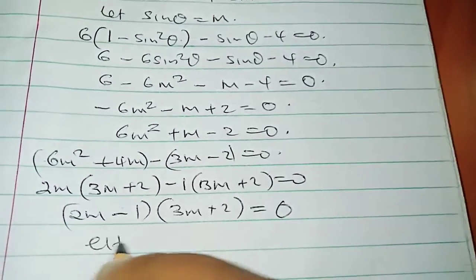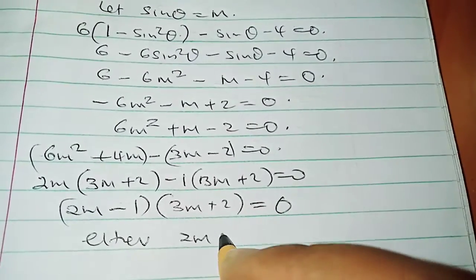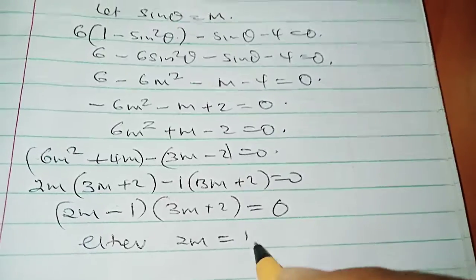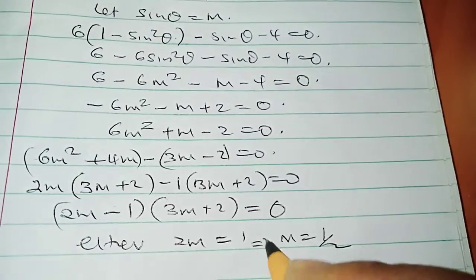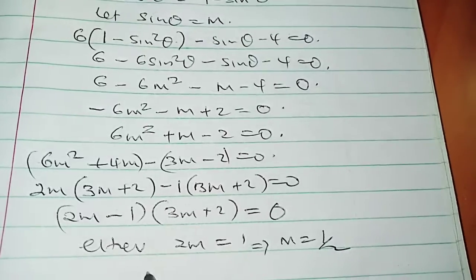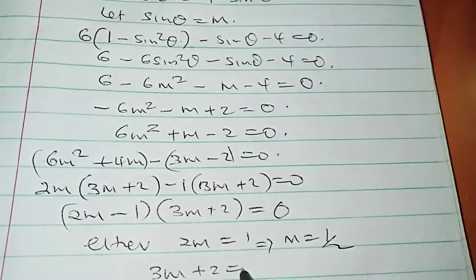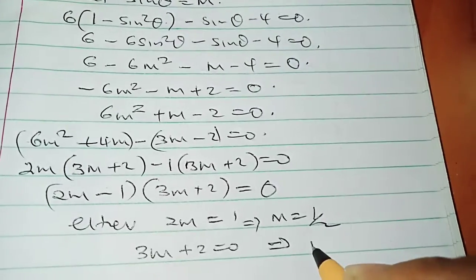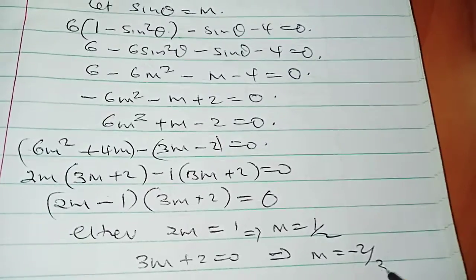So we have either 2m = 1, implying that m = 1/2, and the other one is 3m + 2 = 0, implying that m equals to -2/3.